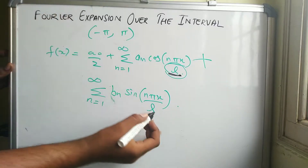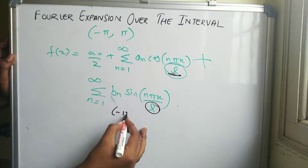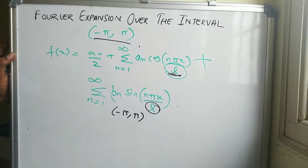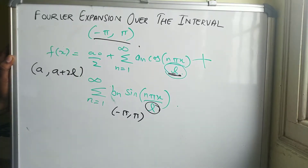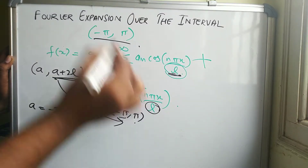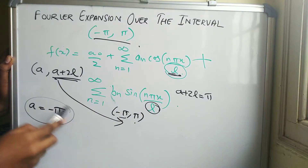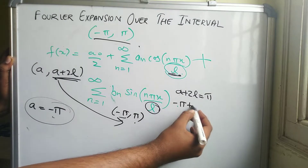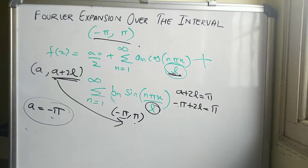To use this formula you need to first calculate l. We know the interval is between minus pi to pi. The general interval form is a to a plus 2l. When we compare this general interval with minus pi to pi, we get a equal to minus pi and a plus 2l equal to pi. Substituting a equal to minus pi gives us minus pi plus 2l equal to pi.